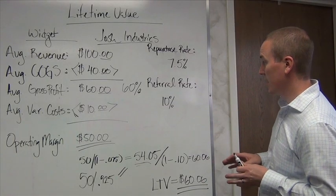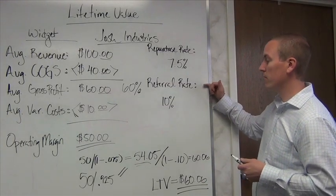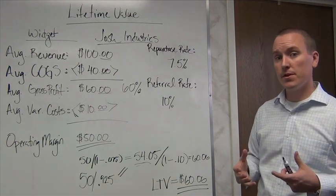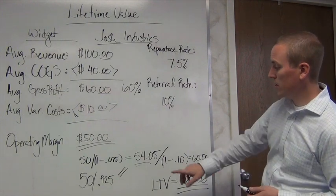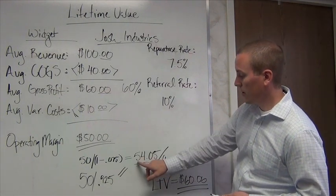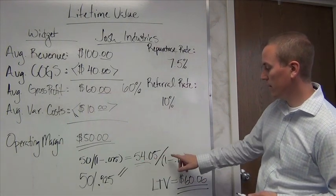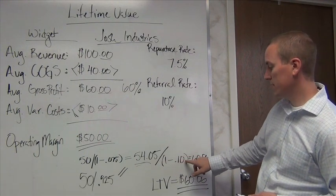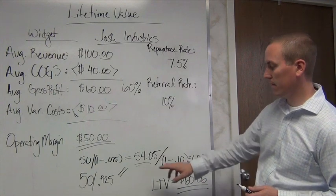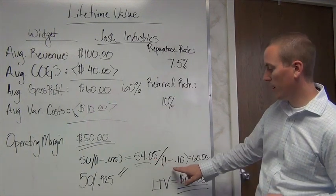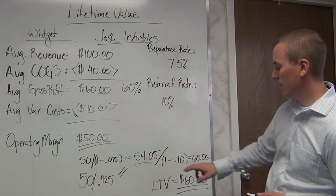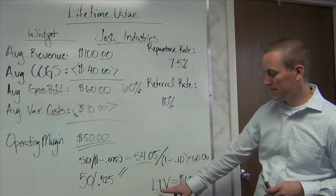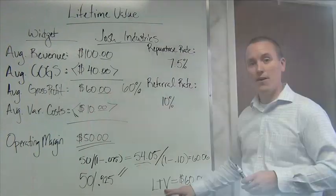Now I'm going to do the same thing, but with the client referral rate. I'm going to say that I've gone back and looked and about 10% of my business comes from client referrals. So I'm going to do the exact same thing. I'm going to take $54.05 and divide it by 1 minus 10% or 0.10. That's the same thing as taking $54.05 and dividing it by 0.9. Either way, I'm going to get $60.06. $60.06 is my LTV or my lifetime value.